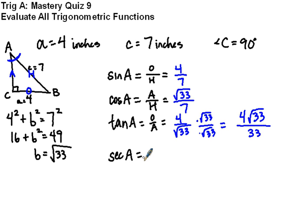Secant is the reciprocal of cosine, so that's hypotenuse over adjacent. Hypotenuse is 7 over, oops, I was going to switch and do this in blue, 7 over adjacent is the square root of 33. We need to do the same trick we just did for tangent.